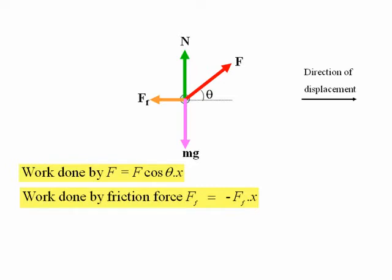The work done by the weight MG and the normal force N are both equal to zero in this case because they are perpendicular to the direction of motion.